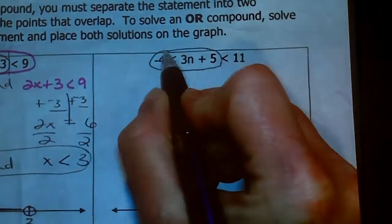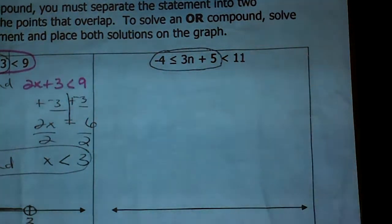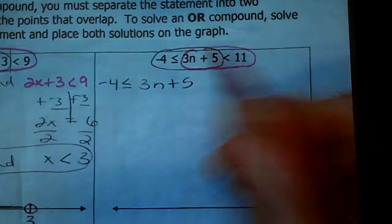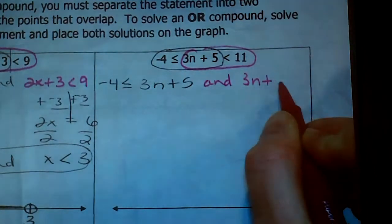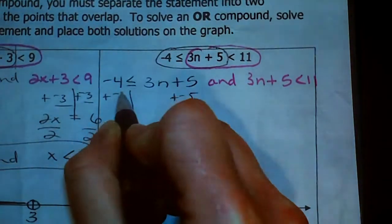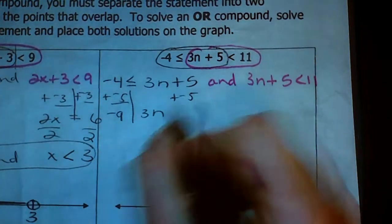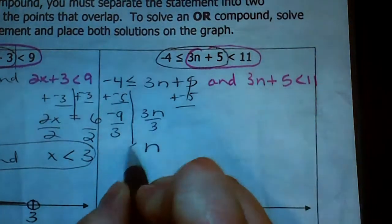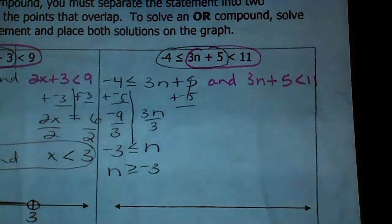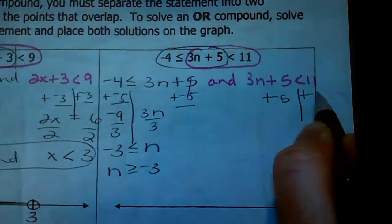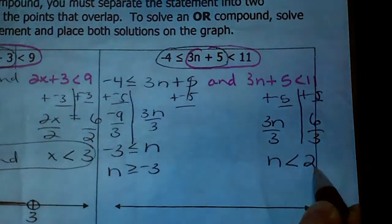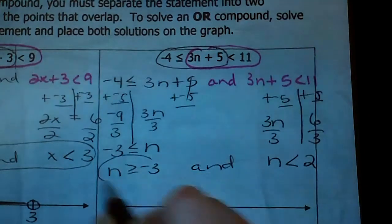Let's try another one. I can tell it's an 'and' because I don't see the word 'or.' We have negative 4 is less than or equal to 3n plus 5, and 3n plus 5 is less than 11. Solving the first: subtract 5 from each side — negative 9 is less than or equal to 3n, divide by 3, so n is greater than or equal to negative 3. Solving the second: subtract 5 — 3n is less than 6, divide by 3, so n is less than 2. The solution statement is n ≥ negative 3 and n < 2.